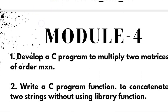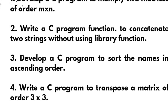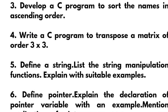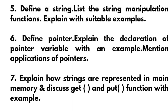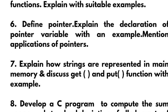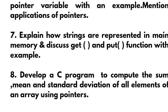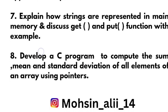Next is module four. Develop a C program to multiply two matrices of order M cross N. Write a C program function to concatenate two strings without using a library function. Develop a C program to sort names in ascending order. Write a C program to transpose a matrix of order 3 cross 3. Cover definitions like: define a string, list the string manipulation functions and explain with suitable examples. Define pointer and explain the declaration of a pointer variable with an example. Mention applications of pointers. Explain how strings are represented in main memory. Discuss getch and putch functions with examples. Develop a C program to compute the sum, mean and standard deviation of all elements of an array using pointers.